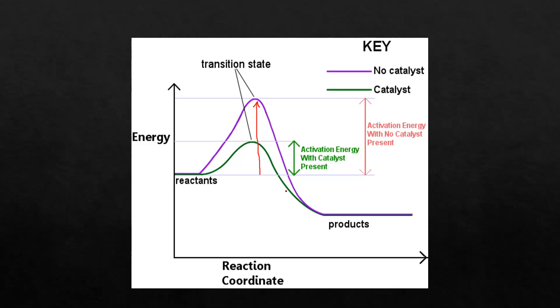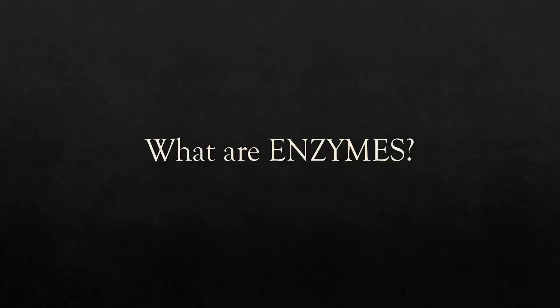Inorganic catalysts are not destroyed by heating or a change of pH. That means organic catalysts are affected by pH or temperature. What are organic catalysts? The term organic means it contains hydrogen and carbon. Organic catalysts are termed enzymes because they contain carbon and hydrogen and are basically protein in nature. So out of all catalysts, a section of organic catalysts is termed enzymes.